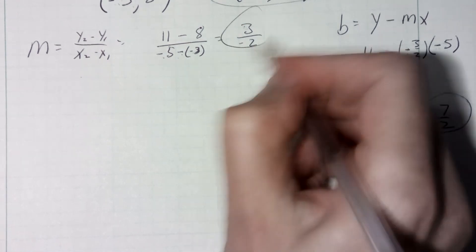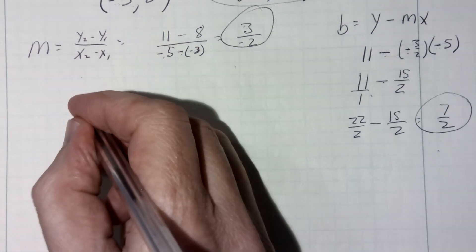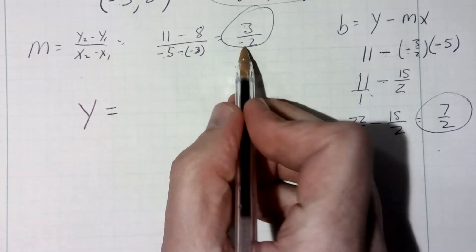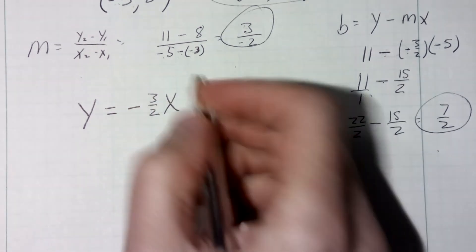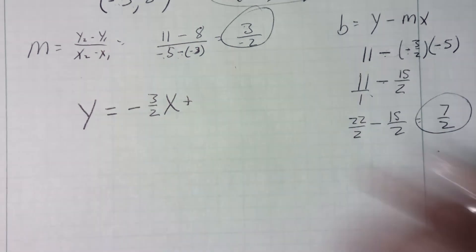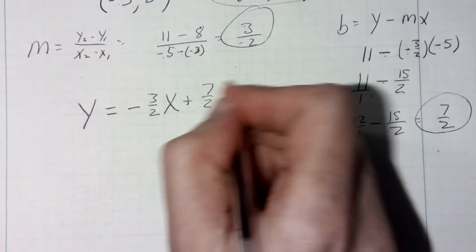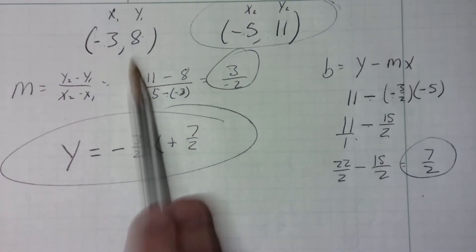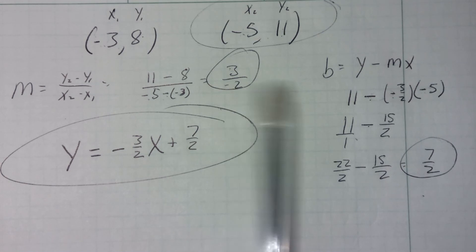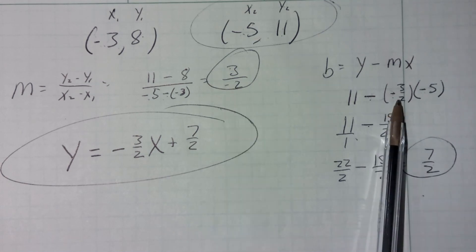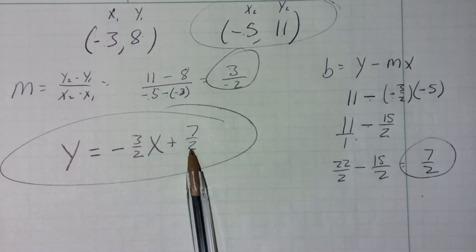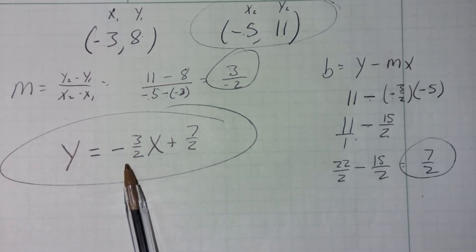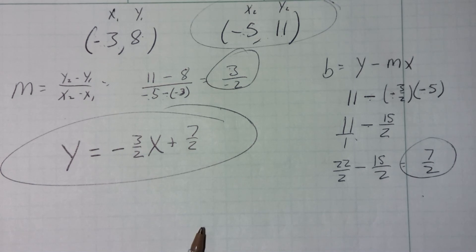My slope was negative three halves, so I can write my equation: y equals negative three halves x plus seven halves. Even if the equations give you a fractional slope and then when you plug it in to find your b you get a fractional y-intercept, that's perfectly fine. There's nothing wrong with fractional y-intercepts and fractional slopes. If you have any questions, please do bring them to class.